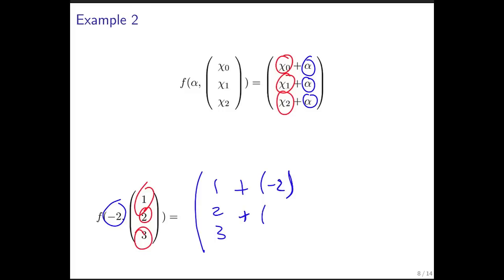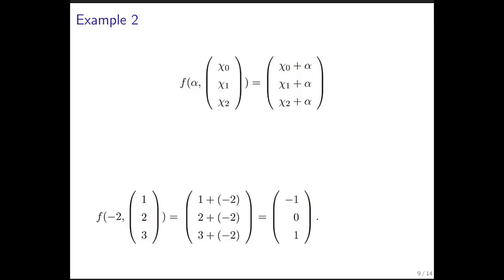So the result is the vector 1, 2, 3, plus minus 2, minus 2, minus 2, resulting in the vector, if you do the arithmetic, minus 1, 0, 1, which is summarized right here.